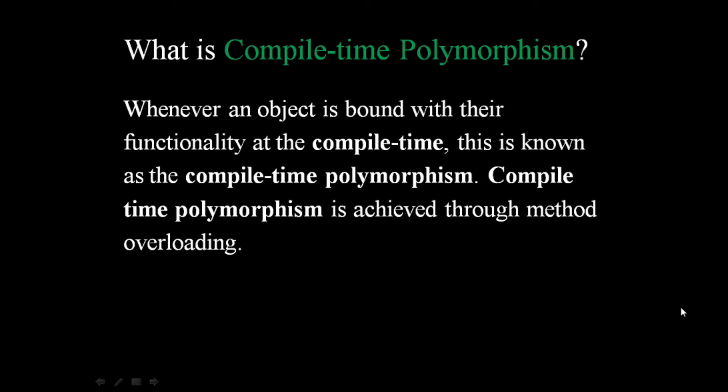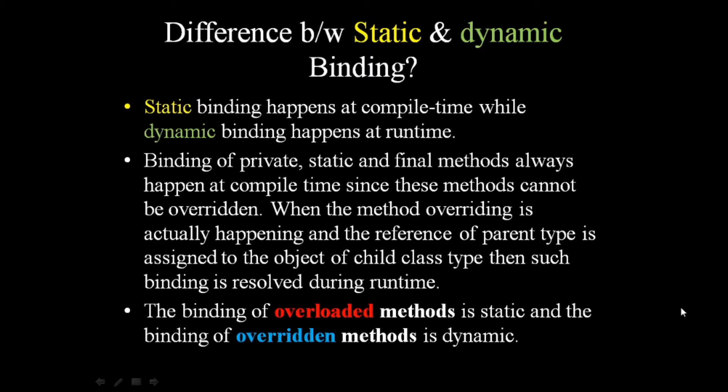Now let us look at compile time polymorphism. In compile time polymorphism, the call is resolved by the compiler. In runtime polymorphism, the call is not resolved by the compiler, as we discussed previously. But in compile time polymorphism, it is resolved by the compiler itself — so it is also known as static binding.